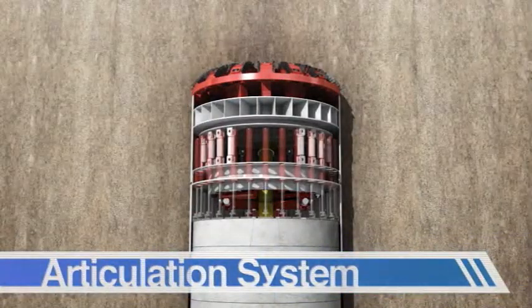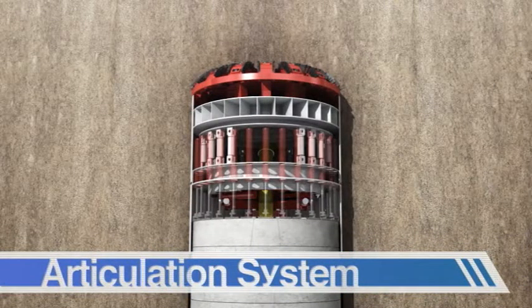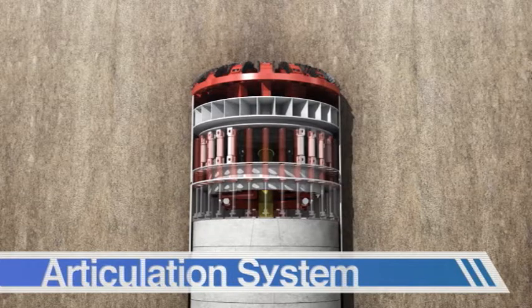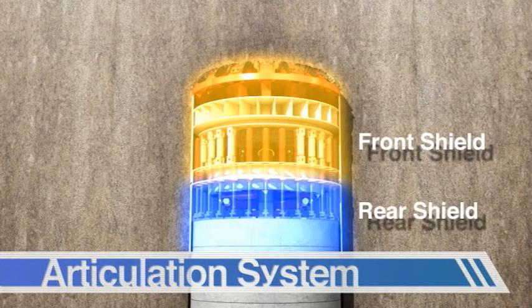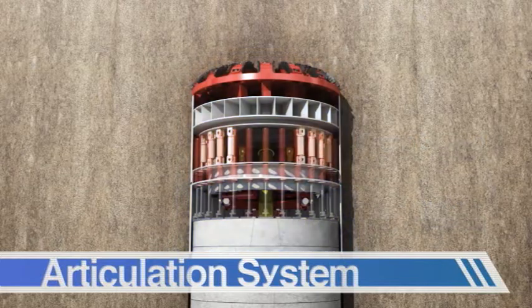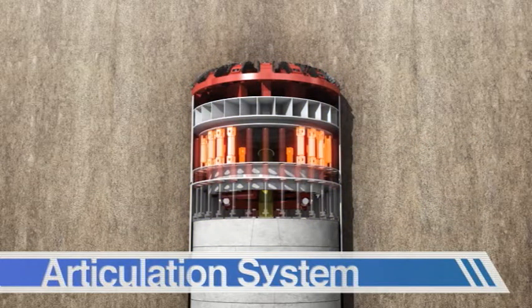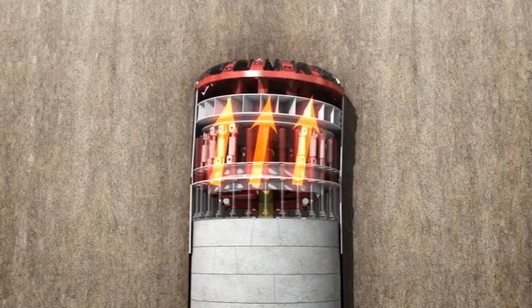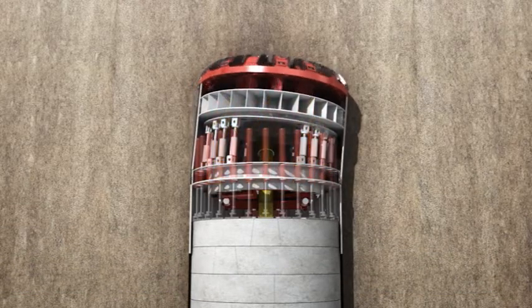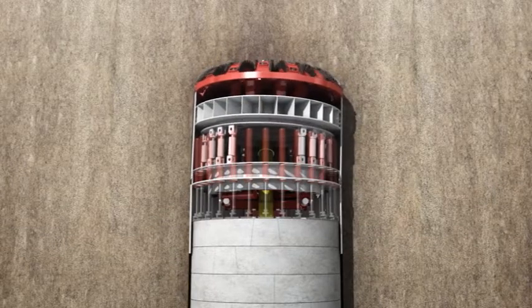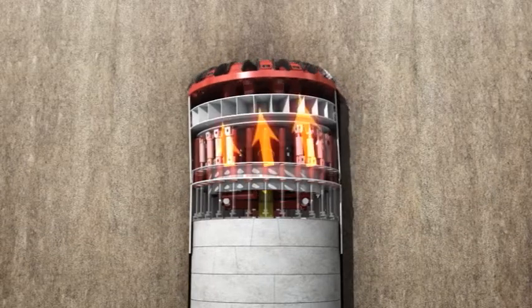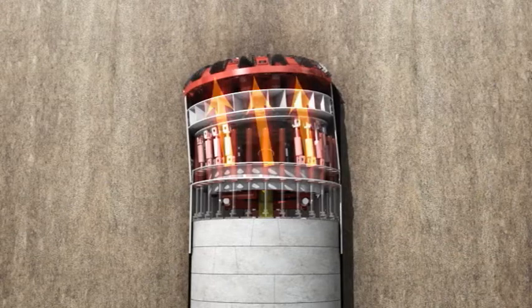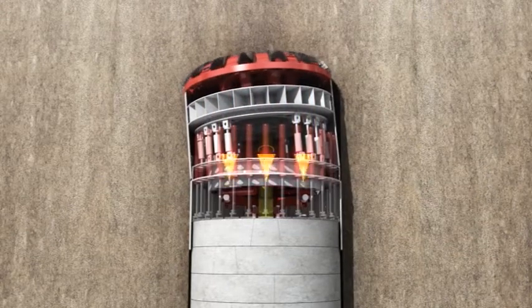When the tunnel alignment requires the negotiation of curves on the way, the shield body may be divided into two sections, front and rear. In this case, both sections of the shield are connected by hydraulic articulation. This articulation transfers all the pushing force of the thrust cylinders from the rear body to the front one, allowing the thrust cylinders to keep pushing evenly through the segment lining.